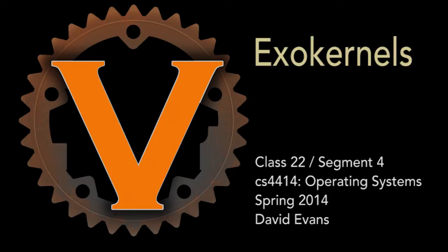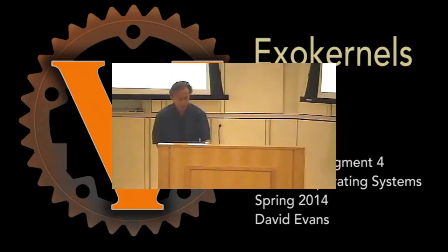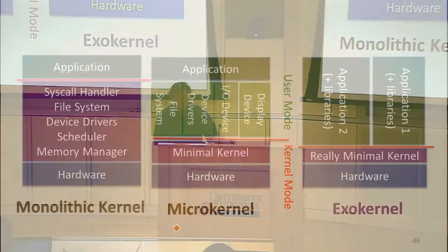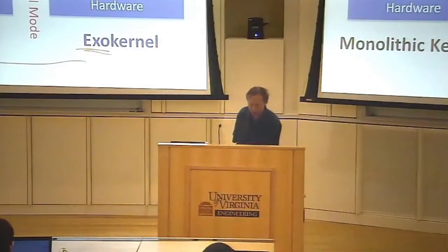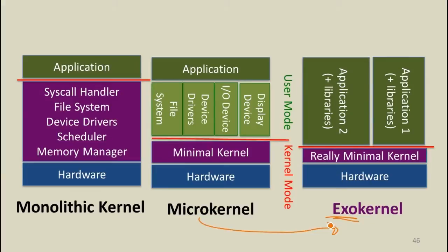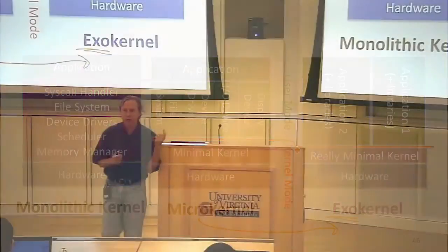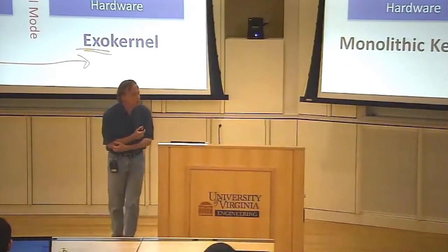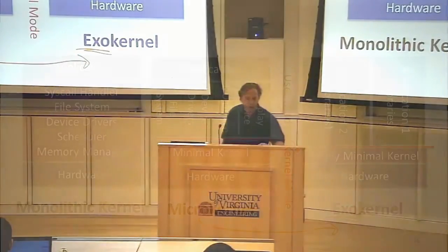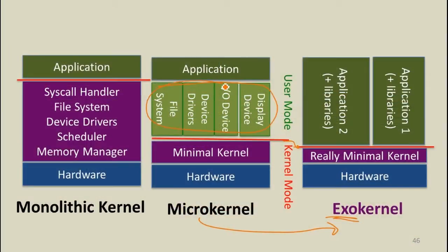I'm going to talk about one other kind of design, which tries to take this even one step further. Exo is not a metric prefix, but it's even smaller than micro. It's trying to make the kernel even smaller, and instead of having standard libraries that implement the same file system for everyone — which is what you had with the microkernel — you're allowing each application to pick its own libraries and put them in its own application process.